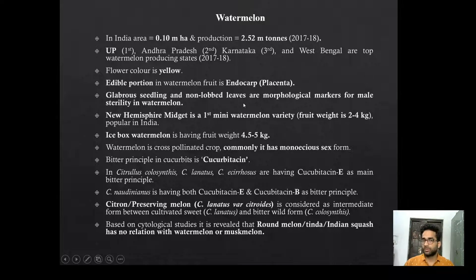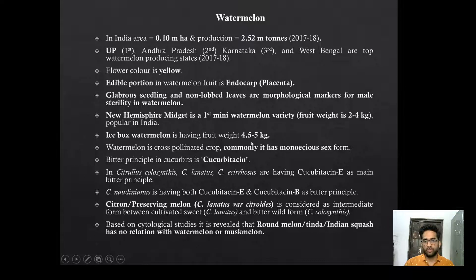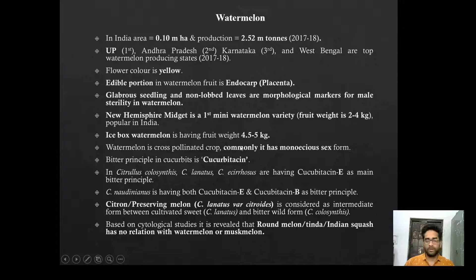Glabrous seedling and non-lobed leaves are morphological markers in watermelon linked to male sterility. New Hampshire Midget is the first mini watermelon variety having 2 to 4 kg fruit weight. Icebox watermelon is 4.5 to 5 kg. Watermelon is classified into different categories based on fruit weight and size: mini watermelon, icebox watermelon, small, medium, large, and giant. The common sex form in watermelon is monoecious — presence of male and female flowers separately on the same plant.